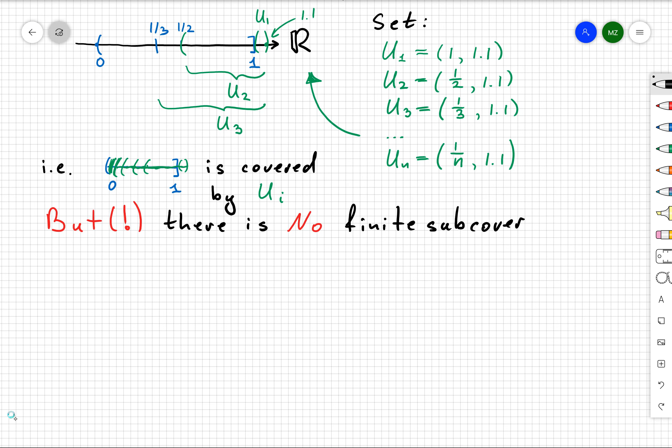But there's a trick - there is no finite subcover. The reason is, if I choose some finite subcover, say Ui1 up to Uik, then I can take the maximum of the indices.